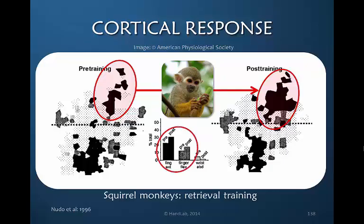The black represents finger extension and the grayish areas represent finger flexion. If you compare the total left to right representations, you will see that training does create significant change.